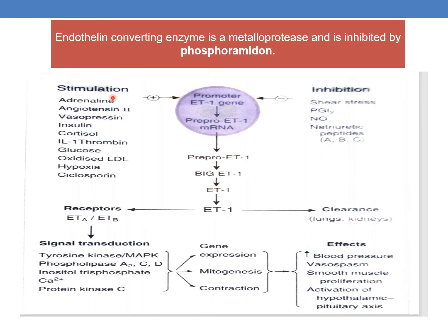Stimuli which stimulate the synthesis of endothelin include adrenaline, angiotensin 2, vasopressin, insulin, cortisol, interleukin 1, thrombin, glucose, oxidized low density lipoproteins, hypoxia, and cyclosporin. These are some of the stimuli which trigger the synthesis of ET1.